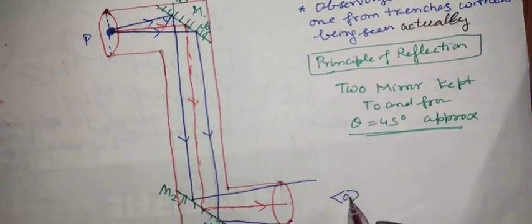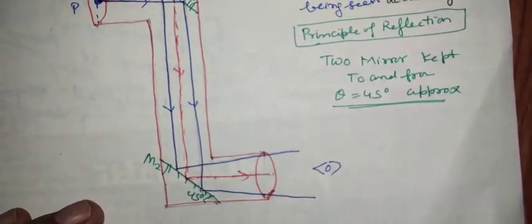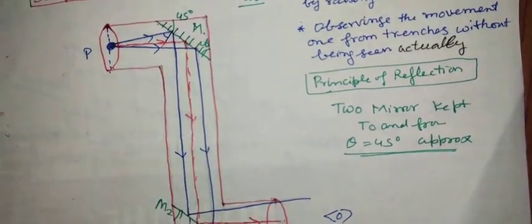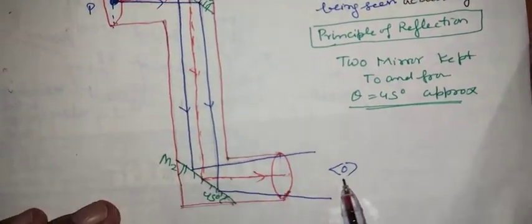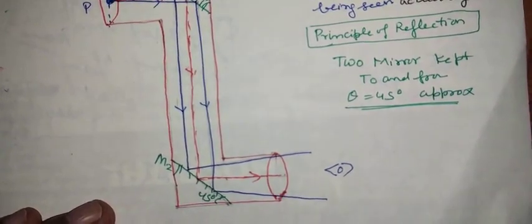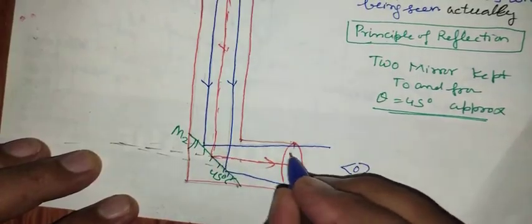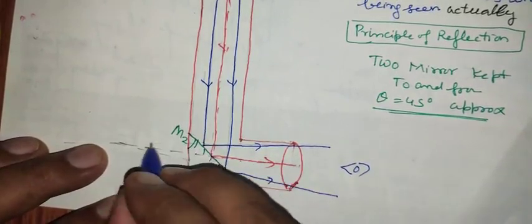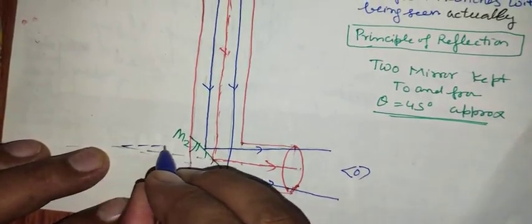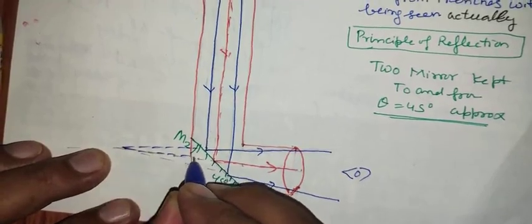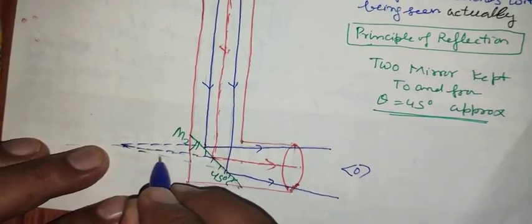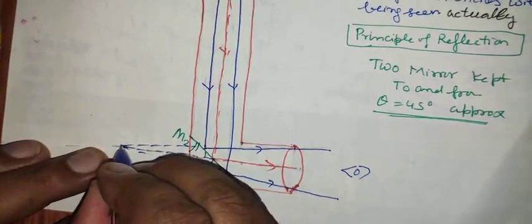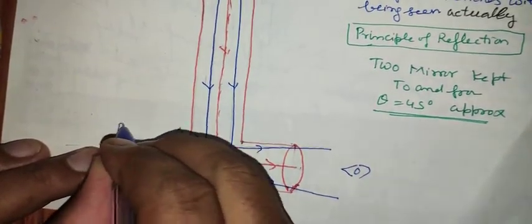Now, when a person sees from the other end, how the image of object P appears at the second end. When this reflected, final reflected beam of light proceeded back, this seems to come from a common point.